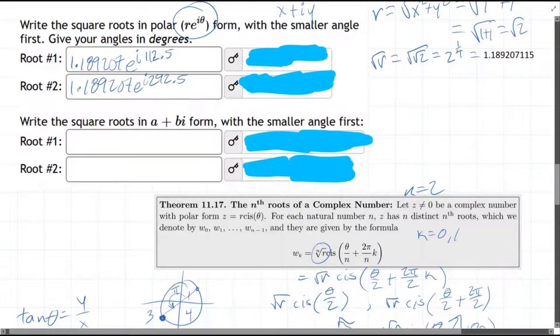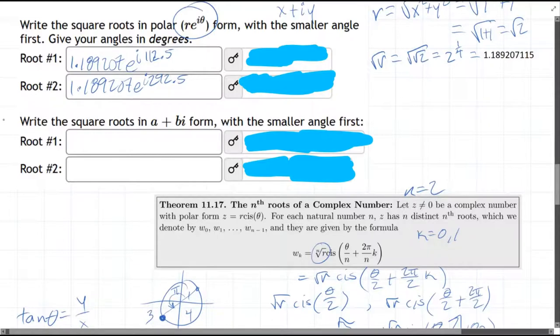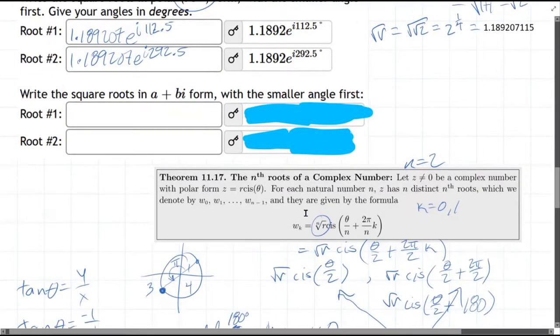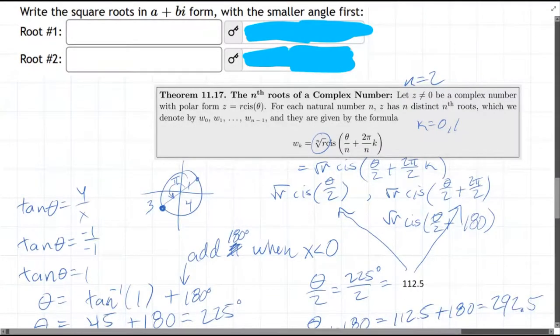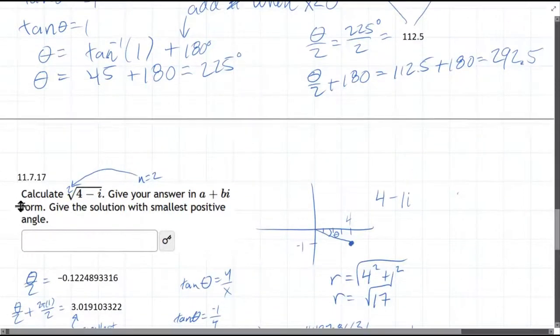The second one was 292.5. Make sure you're careful when you actually type these in. Make sure using the exponent, you may need to put a multiplication in between there. Let's go ahead and uncover these answers. So that gives you the first two. Now how do we get the second two answers? It's back in rectangular form. The way you do that, use the cosine i sine. So I'm only going to do root one here.